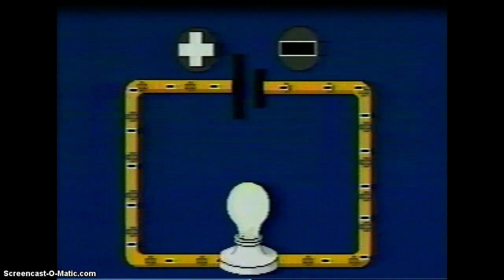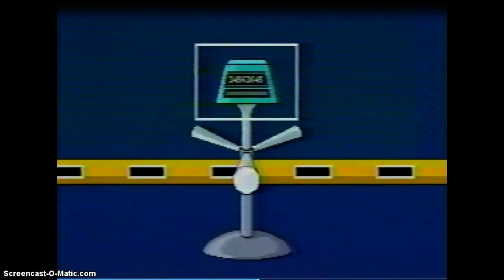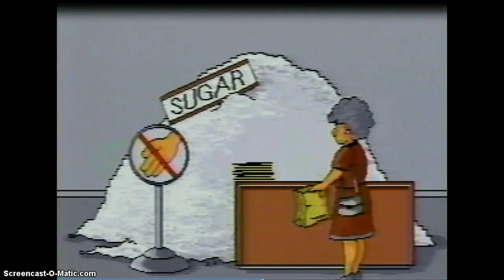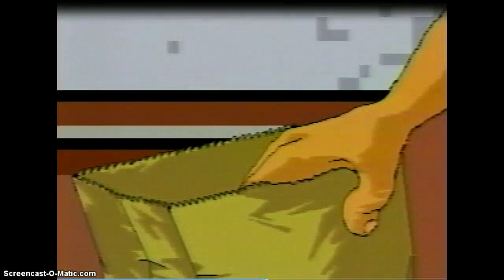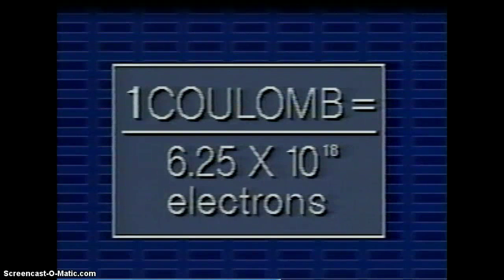But how do we express the amount of charge? We might try to count the number of electrons that pass a specific point in a specific time. But electrons are so tiny that incredibly large numbers of them pass a given point in a short time. Counting electrons would be as ridiculous as trying to buy sugar by the grain. For this reason, instead of considering individual electrons, we consider groups of electrons, which we call coulombs. One coulomb is equal to a group containing 6.25 times 10 to the power of 18 electrons.